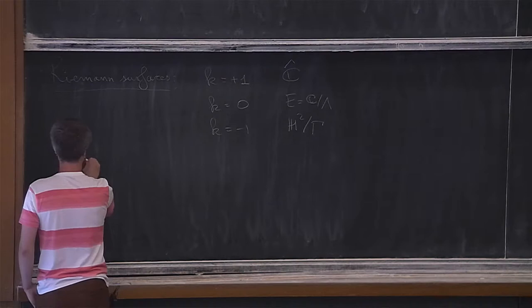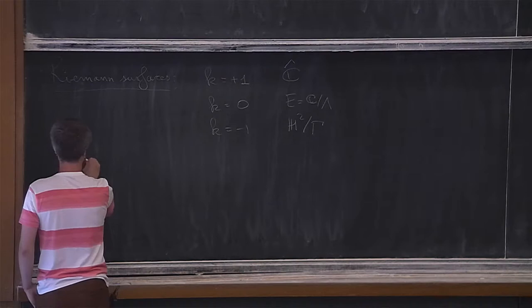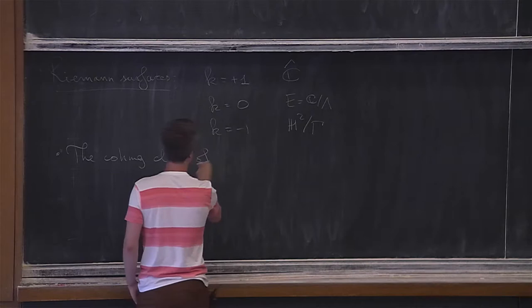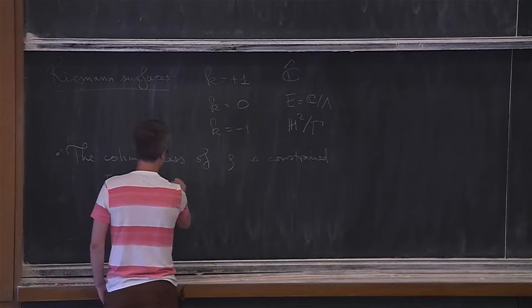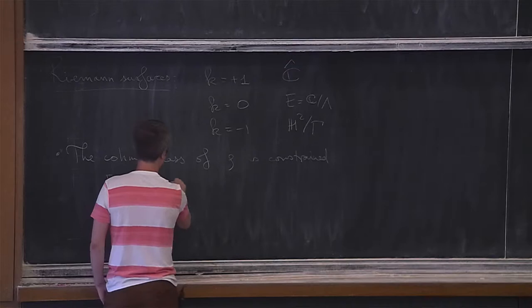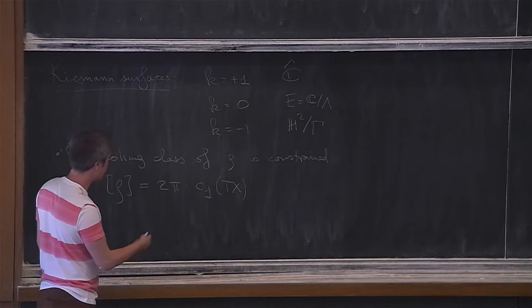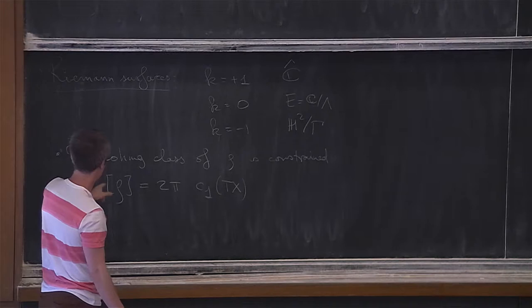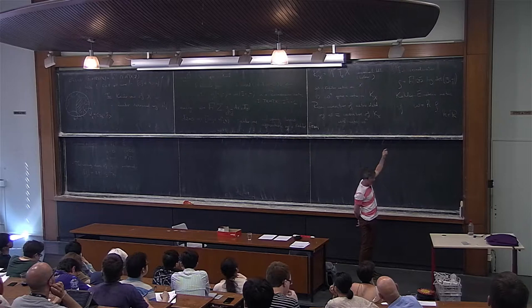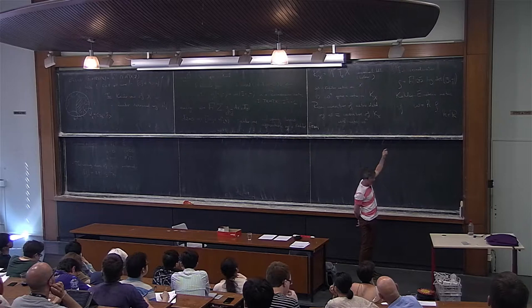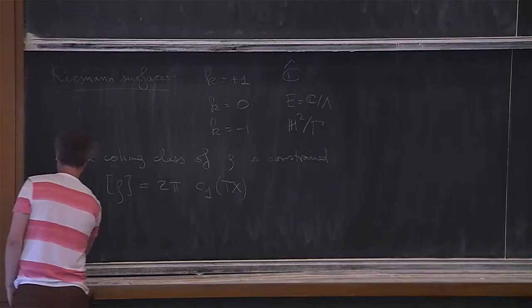It is important to remark that the cohomology class of rho is constrained: rho equals 2 pi times the first Chern class of the tangent bundle of X, so it is predetermined by the topology of the manifold. In particular, it cannot be anything, which implies that if you are looking for a metric satisfying that equation with some choice of k, the sign of k and the choice of omega is essentially predetermined.